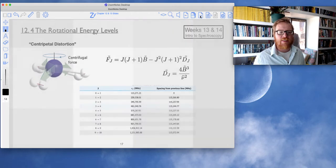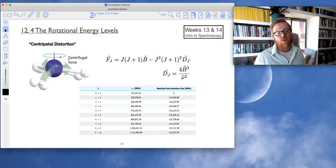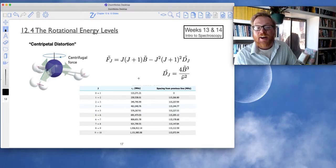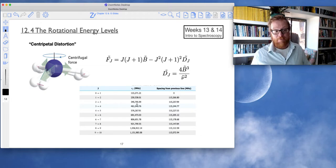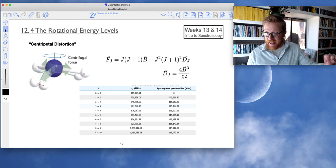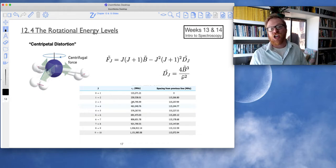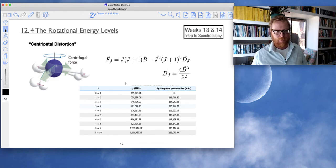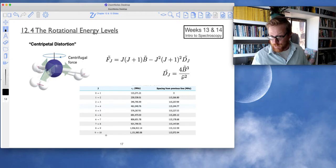Well, as it turns out, when this sample rotates, it experiences what we call centripetal distortion. So those bonds are in fact not rigid. And so as this molecule is being spun around, those bonds are being elongated. That has the effect of changing its moment of inertia and of course its angular momentum. And that effect becomes even more pronounced at higher j levels.